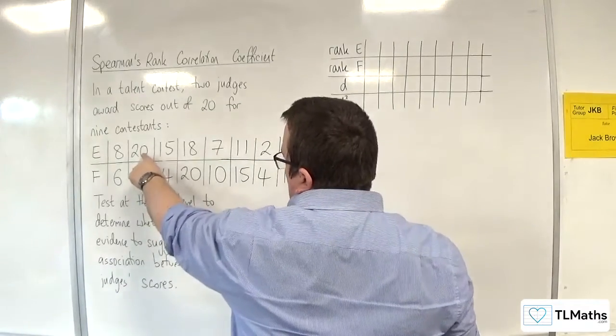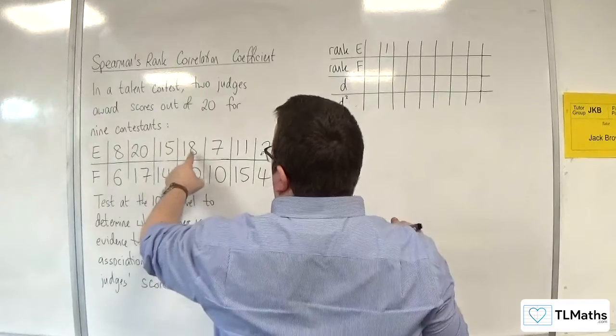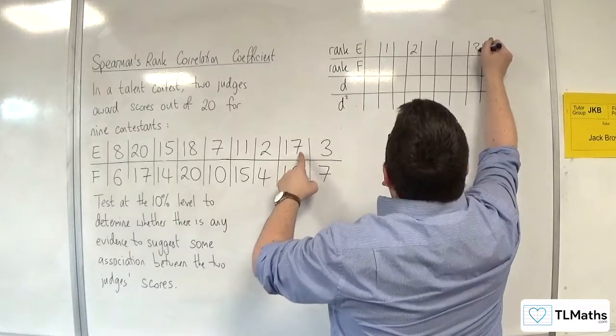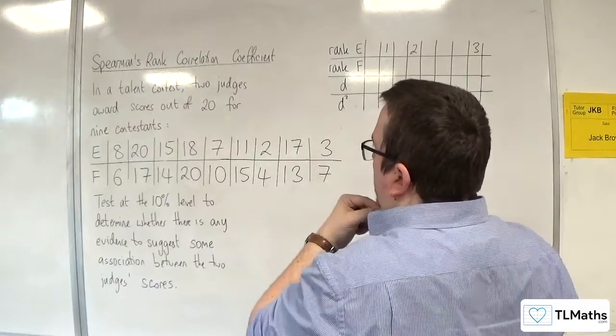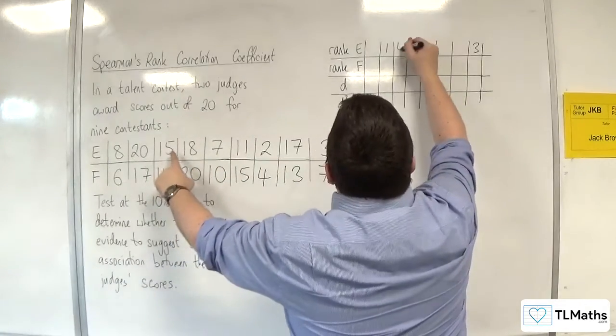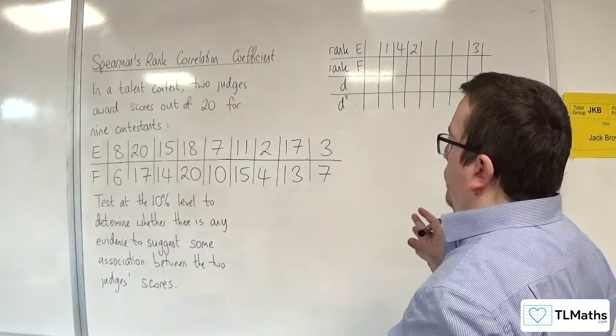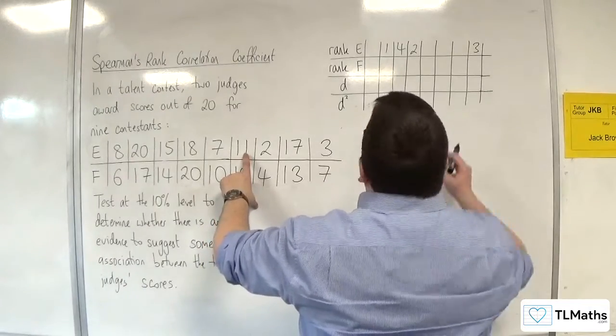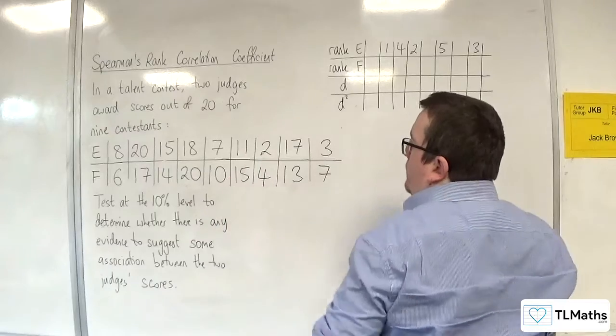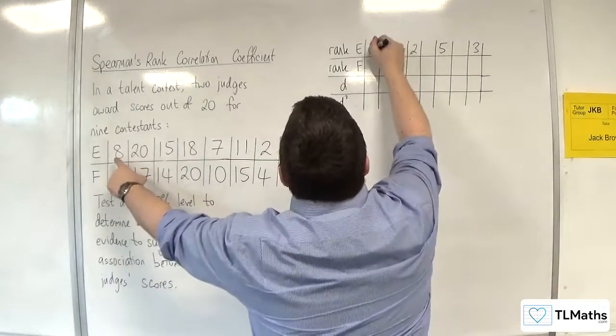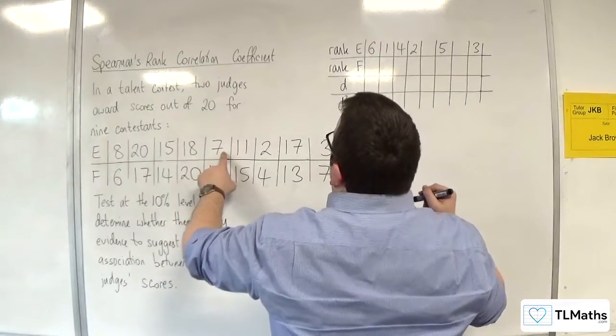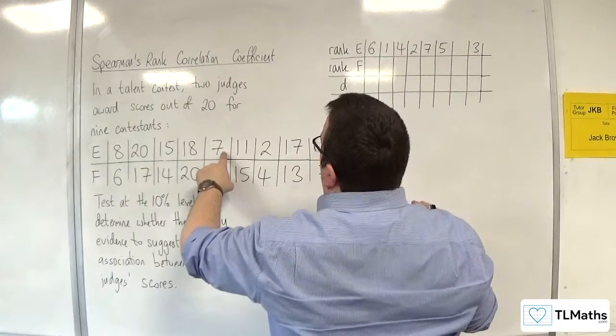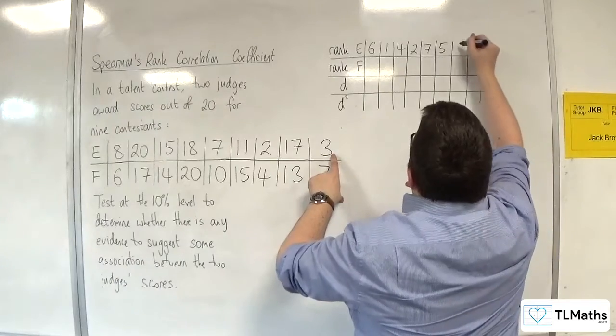Let's go with 20 being first. Then we've got an 18, so that's 2nd. Then the 17, so that's 3rd. Then we've got the 15, so that's 4th. Then no 14, no 13, no 12. The next one's the 11, so that will be 5th. No 10, no 9. Next one's 8, so that'll be 6th. Then we've got the 7, so that's in 7th position. And then we've got the 3, which is going to be 8th, and then that one's going to be 9th.